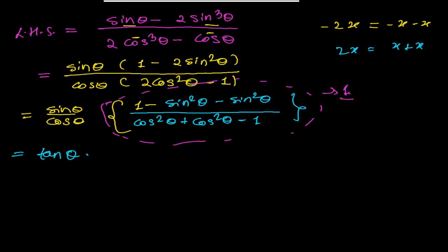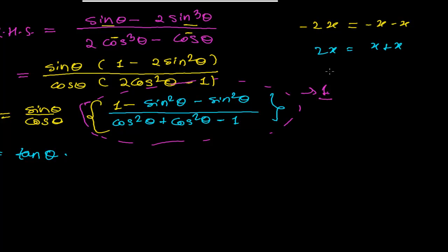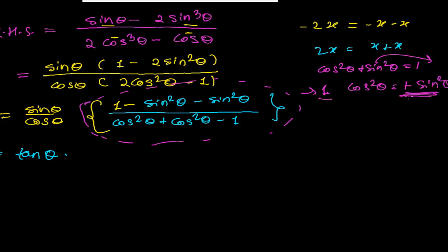So let me think: 1 minus sin²θ — I am getting an identity here! We know that cos²θ plus sin²θ equals 1, which means cos²θ equals 1 minus sin²θ. So in the place of 1 minus sin²θ in the numerator, I can write cos²θ. So I am writing cos²θ minus sin²θ in the numerator.